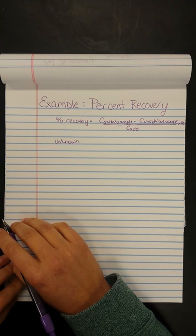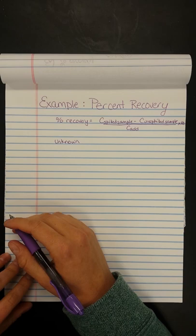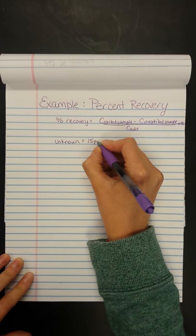Let's say we run a Coke Zero sample, and I'm totally making up this data, so don't call Coke Zero and tell them that I said this. But let's say we run our unknown after we've run a calibration curve and determine that the concentration of caffeine in our unknown is 15 ppm.